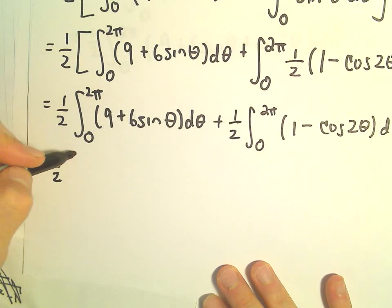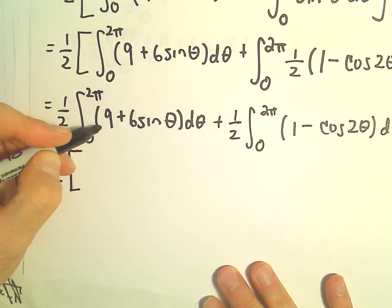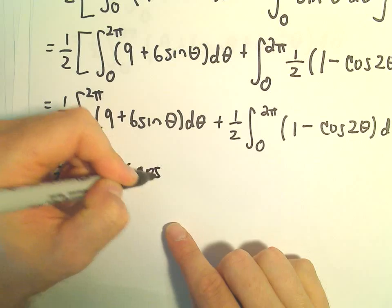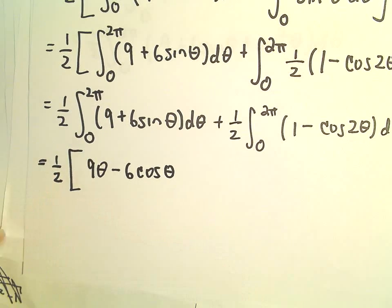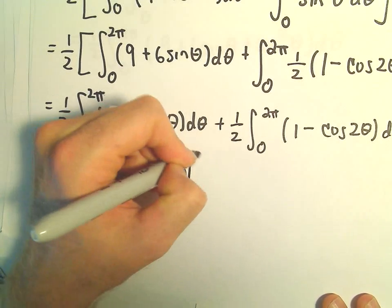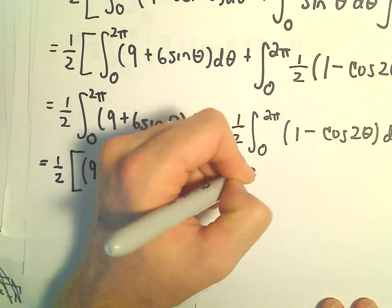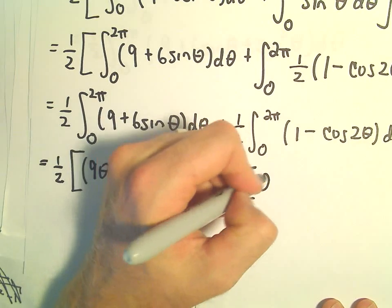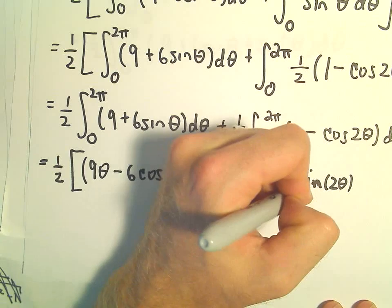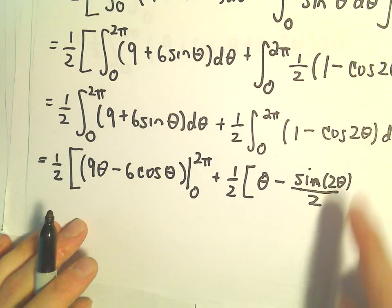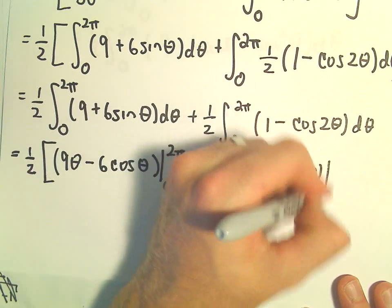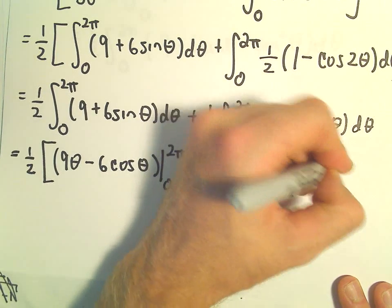So when we integrate, the antiderivative of 9 would be 9 theta, we would have a negative 6 cosine theta to get our positive 6 sine theta. We would evaluate that stuff from 0 to 2 pi, plus we would have 1 half, and then when we integrate we would get theta. We would have minus sine of 2 theta over 2, and that's what we would get after we do our u substitution. All of that would be evaluated likewise from 0 to 2 pi.